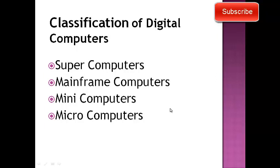Digital Computers ko hum on the basis of size, performance, aur speed par 4 types mein divide karte hain. Sab se pehle Super Computers hain, phir uske baad Main Frame, Mini aur Micro Computers.